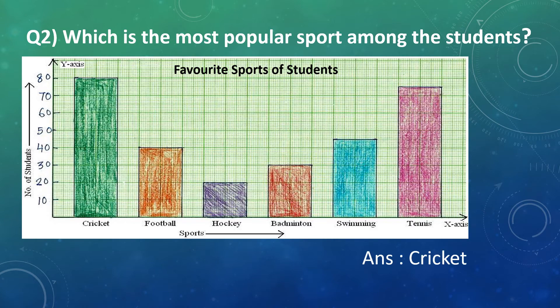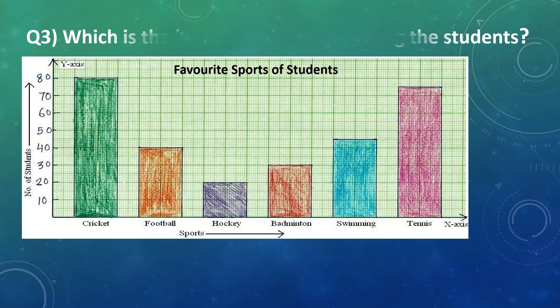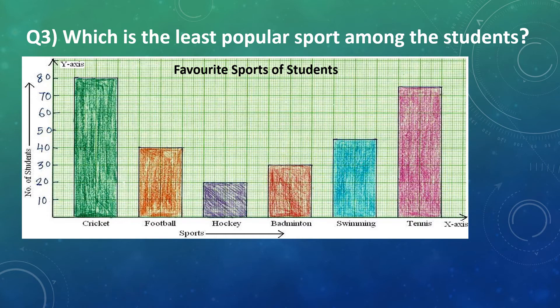Cricket is the most popular sport among the students. Question number 3: Which is the least popular sport among the students? Again, we will compare the height of each bar that represents sports. Here, we can see that the lowest bar is of hockey, which reaches up to the scale of 20.